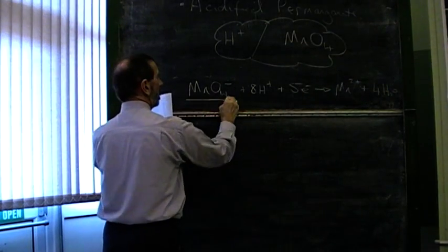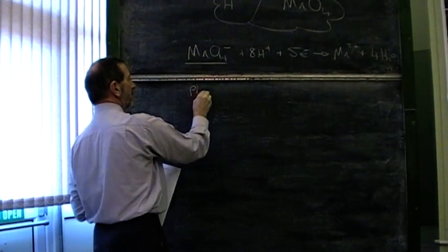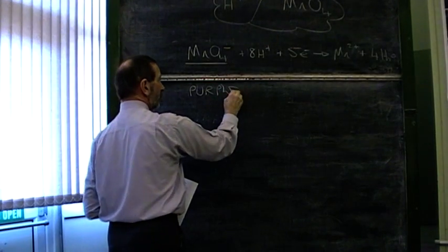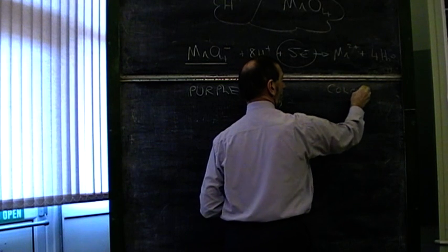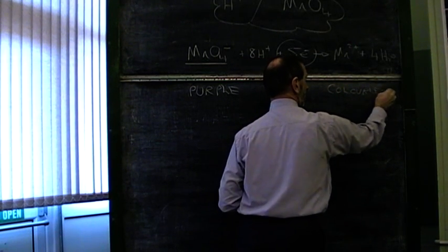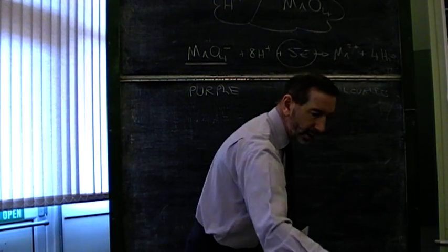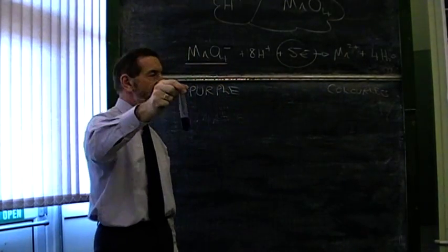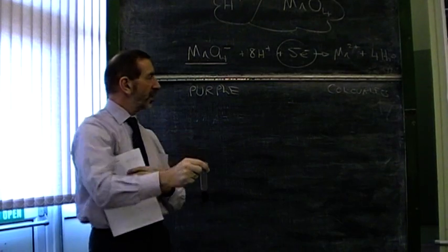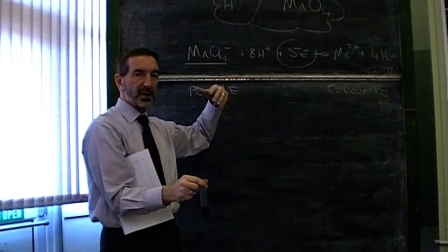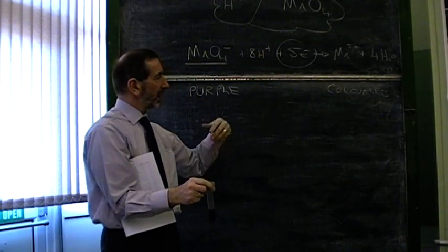It undergoes a colour change, because when we have this form, it's purple. A very strong purple colour. But when it gains electrons, it becomes colourless. I've got some acidified permanganate here. It's got a very distinct purple colour. If this was to lose its colour, this must have gained electrons. Therefore something else has lost electrons. Therefore something else has been oxidised.